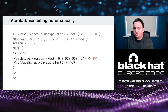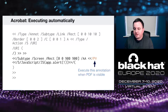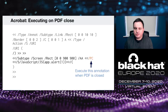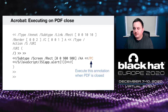You can also execute automatically on Acrobat, which is really powerful — all the victim needs to do is open the PDF. You can do this using the 'PV' dictionary key; once specified, the annotation will execute automatically when the page is loaded. There is also a 'PC' dictionary key, which executes when the PDF is closed. So with a blind PDF injection, you can know when the victim opened the PDF and when they closed it — very powerful.